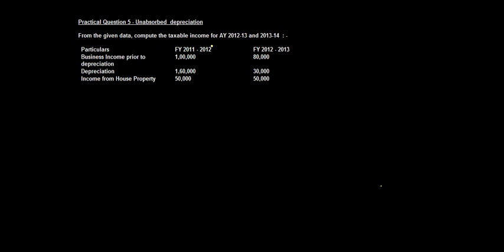From the given data, compute the taxable income for assessment year 2012-13 and 2013-14. You're given data for financial year 2011-12 and 2012-13, which correspond to those assessment years. The business income prior to depreciation is one lakh eighty thousand, depreciation is one lakh sixty thousand and thirty thousand respectively, and income from house property is fifty thousand each for these two years.